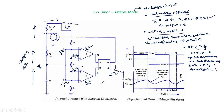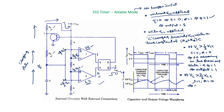If the capacitor charges to a value slightly more than 2/3 Vcc, then for the upper comparator the positive terminal voltage exceeds 2/3 Vcc (the negative terminal), so output becomes 1. For the lower comparator the negative terminal is now greater than the positive terminal, so that output remains 0. As a result, S becomes 1 and R becomes 0, meaning the set input is 1 and Q = 1, which is the output.